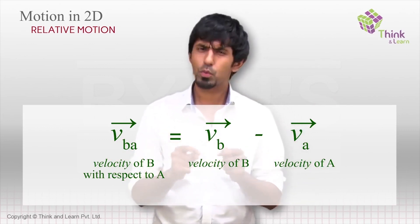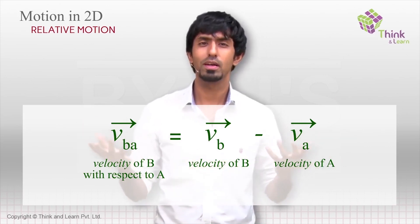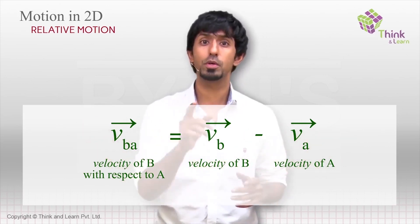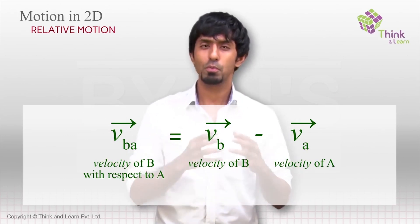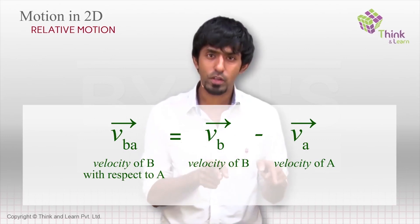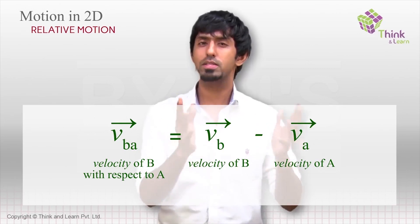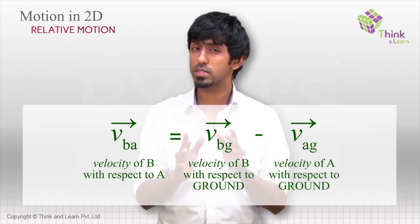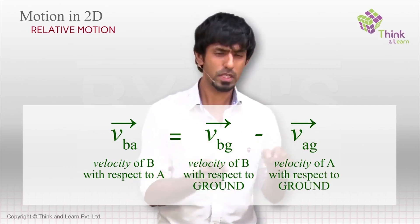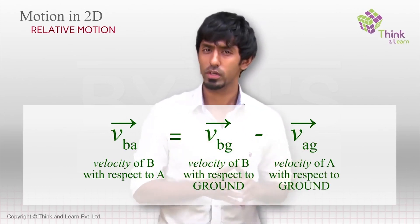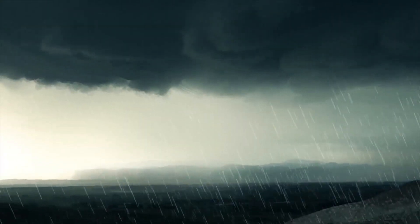You might ask: v_BA is velocity of B with respect to A, but what are v_B and v_A — velocity with respect to what? It sounds like there's some absolute velocity, but there is no absolute velocity. In most cases v_B and v_A are measured from some third neutral frame — typically the ground frame. To be more precise we write v_BG and v_AG. It's important to understand this to avoid confusion.